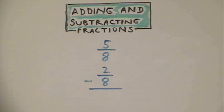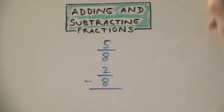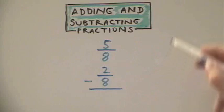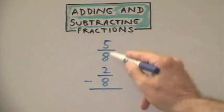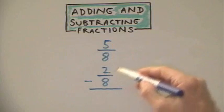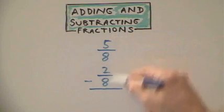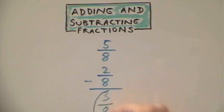For our final example, we have a subtraction problem: 5 eighths minus 2 eighths. Since our denominators are the same, all we do is subtract the numerators. 5 minus 2 is 3. This cannot be reduced, so our final answer is 3 eighths.